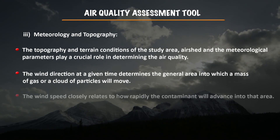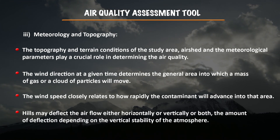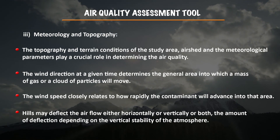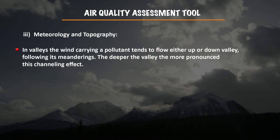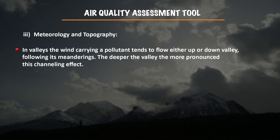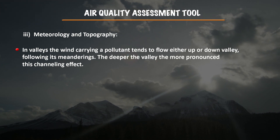In hilly areas or mountain ranges, terrain may deflect airflow horizontally, vertically, or both, and the amount of deflection depends on the vertical stability of the atmosphere. In valleys, wind carrying a pollutant tends to flow either up or down the valley — the deeper the valley, the more pronounced the channeling effect. To conclude, we have seen how air quality impact analysis is conducted using the example of lead, and how meteorological factors influence air quality analysis. In the next session, we will discuss more details about environmental impact assessment.